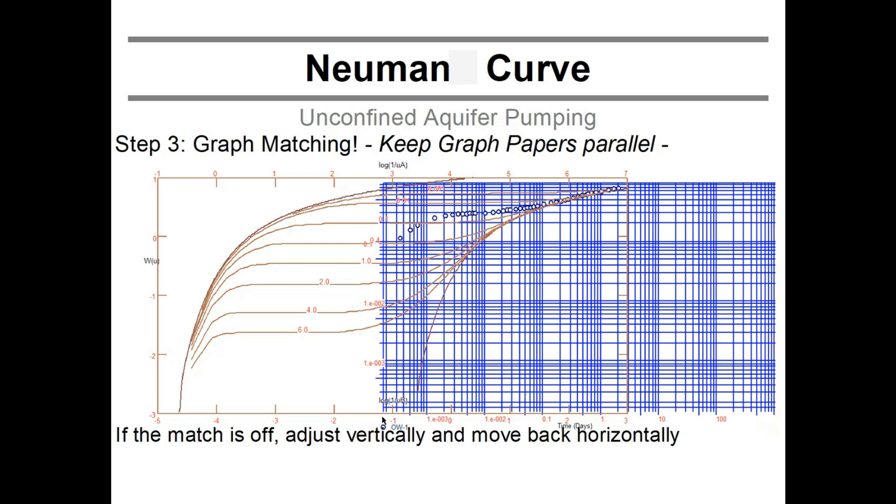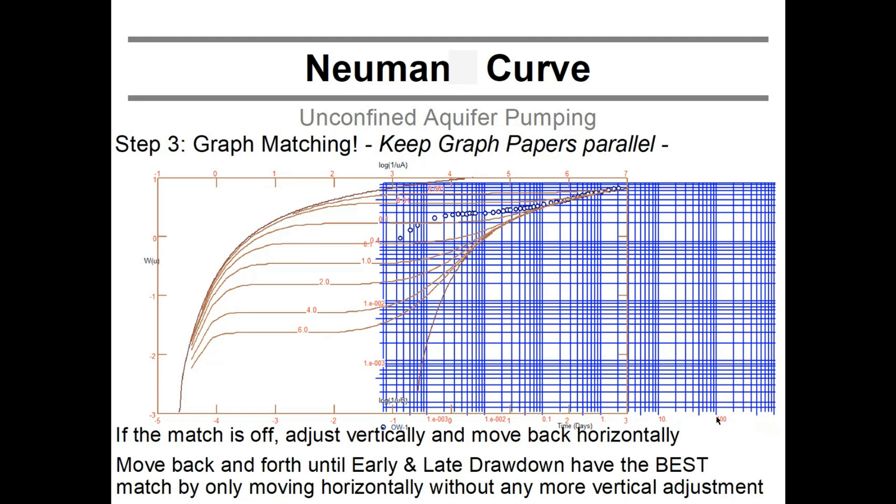If the match is off, adjust vertically a little bit, then move back horizontal and see if the first match is still good. If this is off now, you need to adjust it again and move it back. You're just basically sliding back and forth, back and forth, and find a position where you, once, when you slide it, both the end and the beginning are matching okay. You can slide it then only horizontally. So move back and forth, early and late drawdown, have the best match by only moving horizontally without any more vertical adjustments. Back and forth.